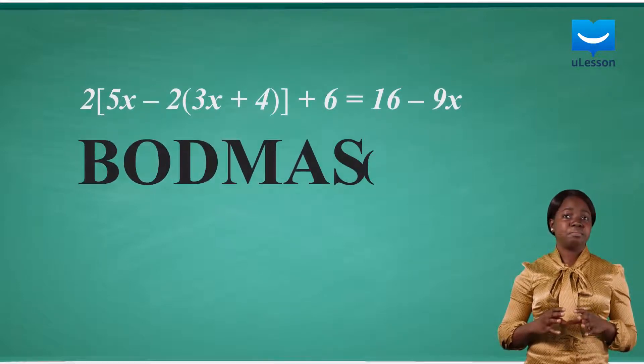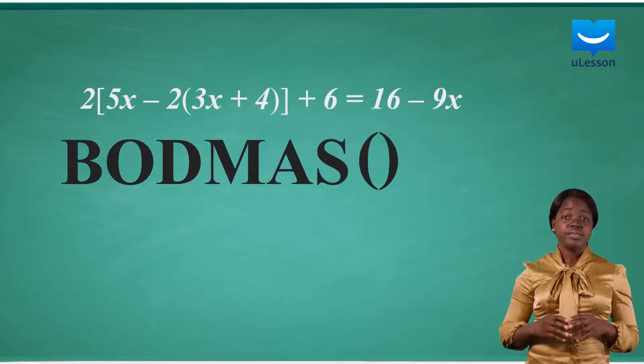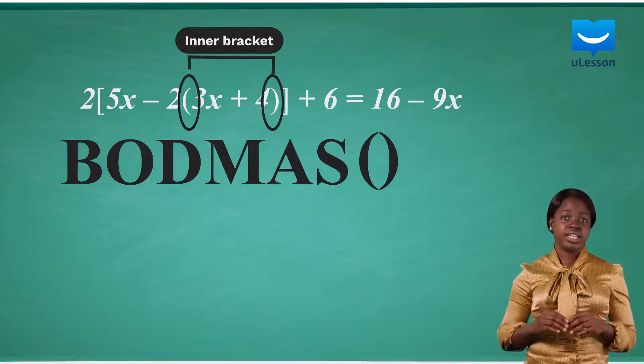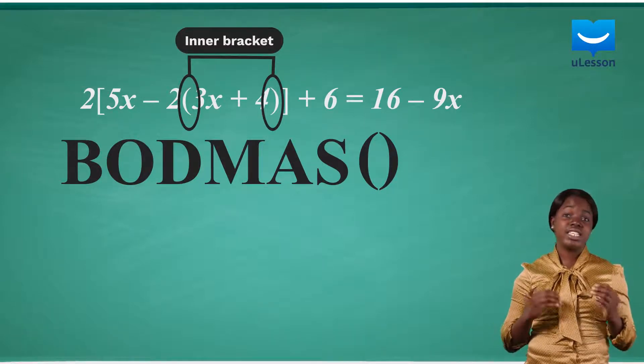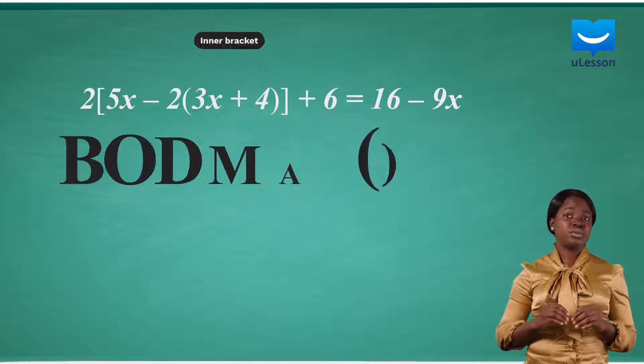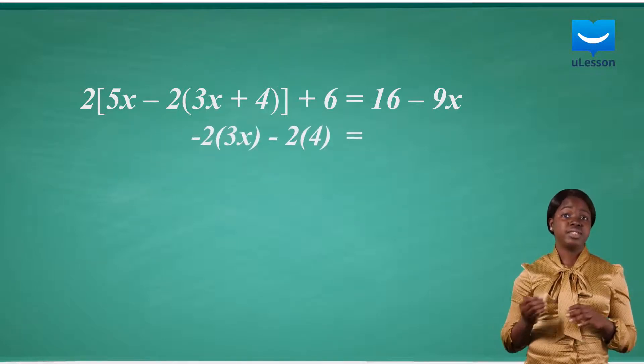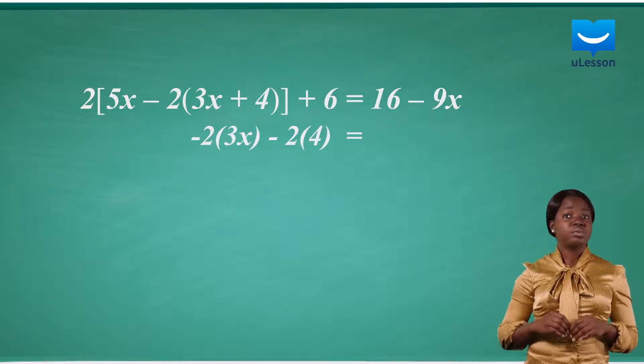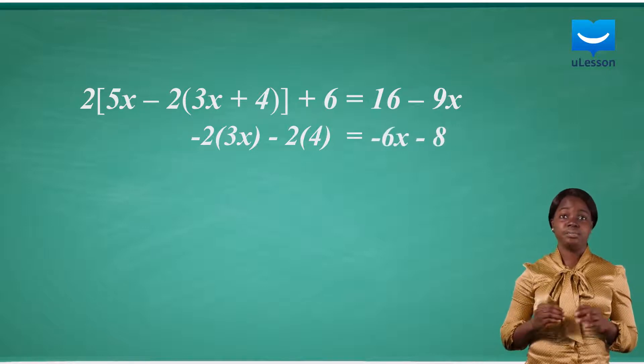According to BODMAS, bracket comes first in operation. Therefore, we expand the inner bracket. Note that we solve nested brackets inside out. And doing so, we have minus 2 times 3x minus 2 times 4, which is equal to minus 6x minus 8.